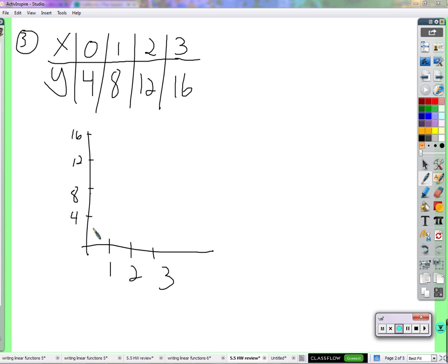Graph the data. So 0, 4. Of course, that's 0 for x, 4 for y. 1, 8. 2, 12. 3, 16.